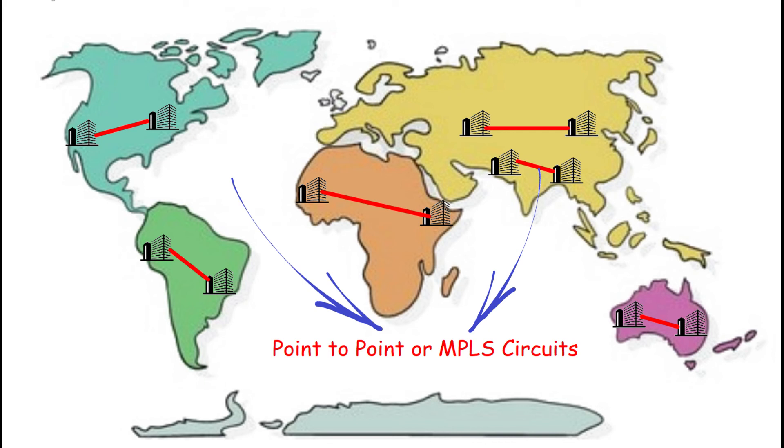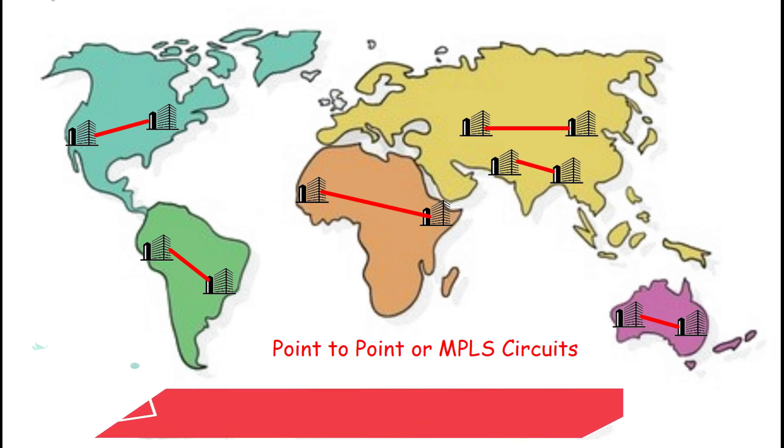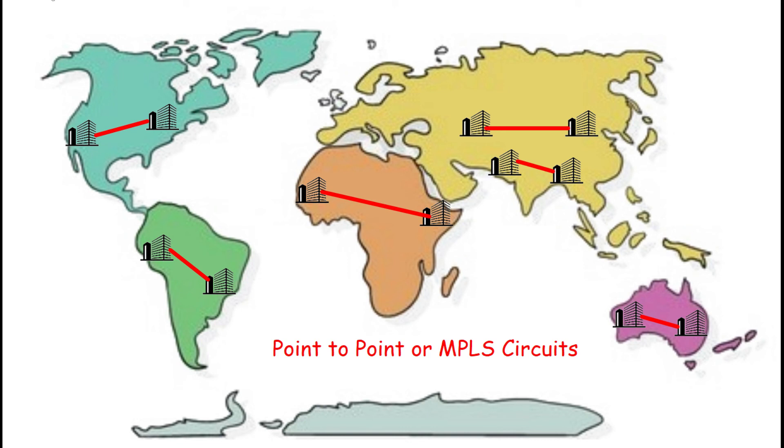But what if we have multiple branch offices in different countries? Then this point-to-point or MPLS solution is going to be very expensive. So in that case, what we could do is use VPN, which is also known as virtual private network, over the internet. So what happens in virtual private network is the traffic that passes between these two offices is in the encrypted format. So if any machine or any human gets hands on this particular data, it becomes very difficult and almost impossible to understand the data and decrypt the traffic.